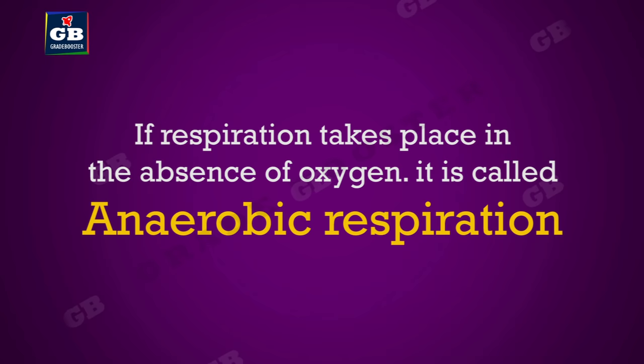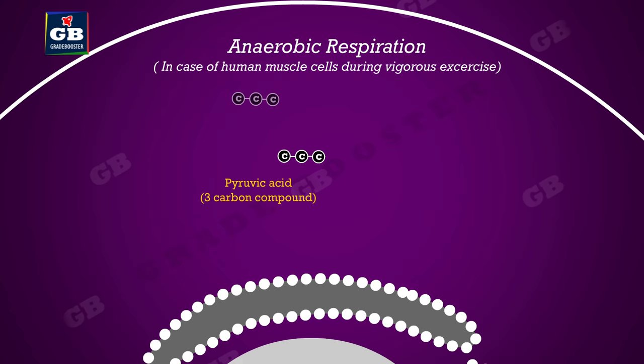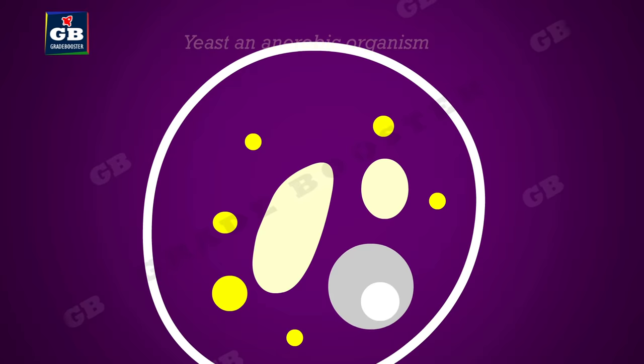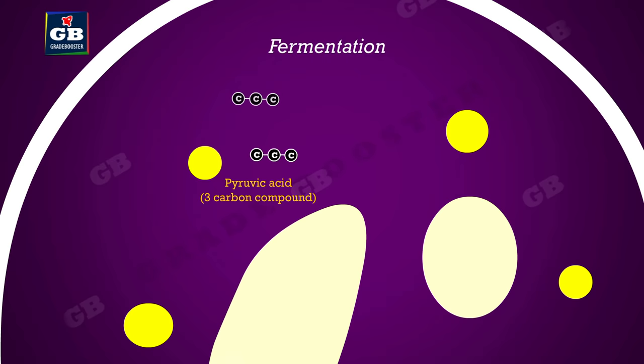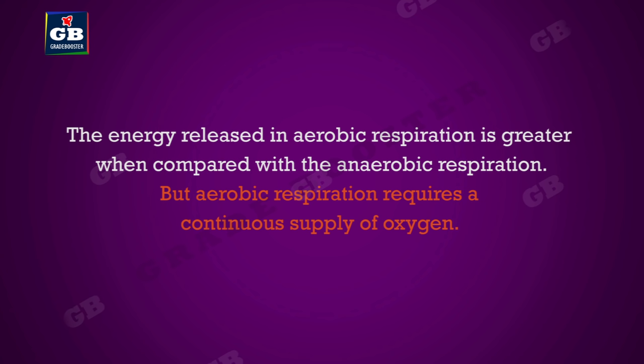Respiration in the absence of oxygen is called anaerobic respiration. When we do vigorous exercise, our muscle cells get deprived of oxygen; in such cases glucose is converted to pyruvate, which in turn gives out lactic acid and energy. In yeast, an anaerobic organism, glucose is converted to pyruvic acid, which releases energy by converting into ethanol and carbon dioxide — this process is called fermentation. The energy released in aerobic respiration is greater than in anaerobic respiration.